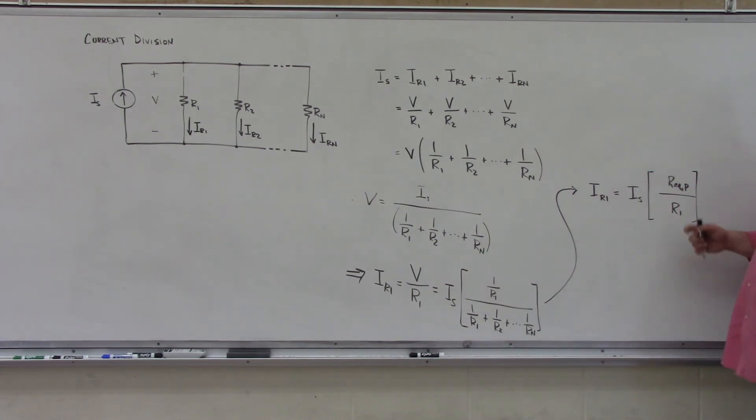So we have almost the inverse relationship that we had for voltage division. For voltage division, we saw that it was the source voltage multiplied by the resistor we wanted divided by the equivalent series resistance. And for current division, we see that the current through resistor R1 is the source current multiplied by the equivalent parallel resistance divided by the resistor we wanted, which in this case was R1.